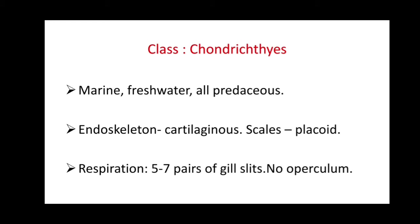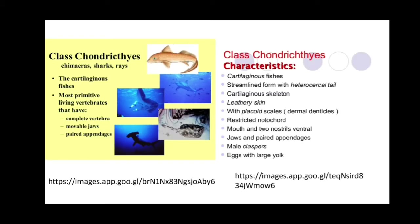The next class is Chondrichthyes. The fishes under this class are marine or freshwater and are all predaceous — they completely depend on other organisms for food. The endoskeleton is cartilaginous, and the scale type is placoid. Respiration occurs with the help of gills, and five to seven pairs of gill slits are present. These gill slits are not covered by an operculum — there is no operculum in cartilaginous fishes.